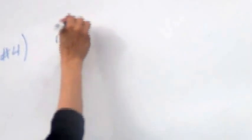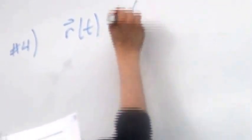For exercise number 4, you're given R of t equal to (4 plus cosine t) i minus (negative 3 minus sine t) j. We are asked to find the unit tangent and unit normal vectors at the point where t is pi over 6. So let's just see if we can do this.